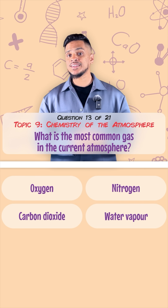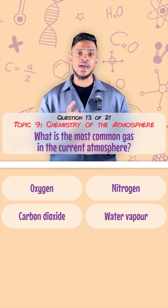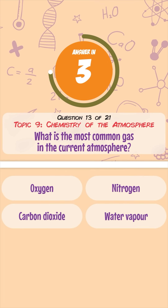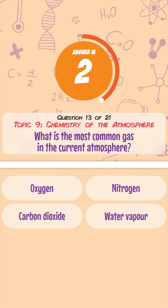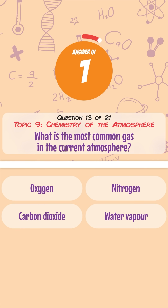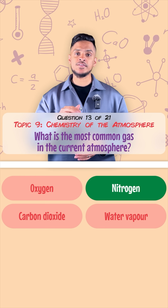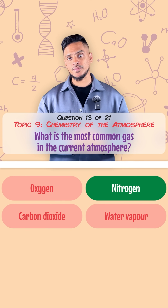What is the most common gas in the current atmosphere? That's nitrogen — there's around 78% of it.